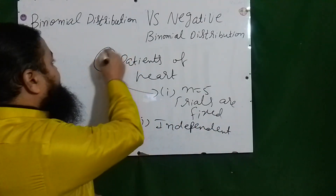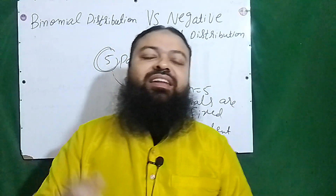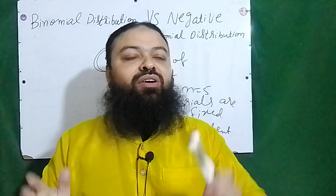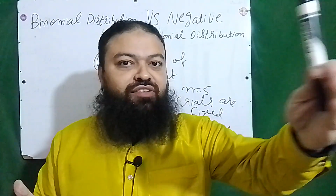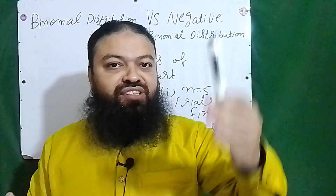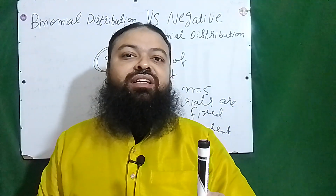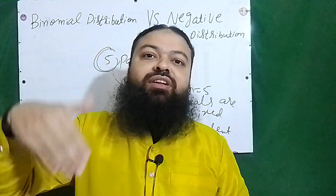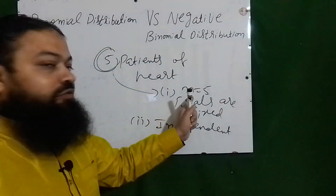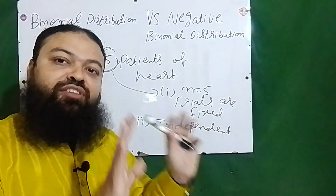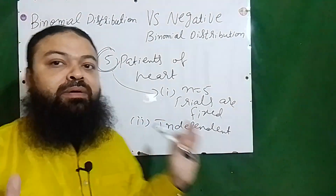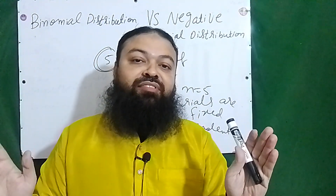These patients are independent. Their names are A, B, C, D, and E — all are independent. A has no connection with B, B has no connection with C, D has no connection with E. The probability will not be affected. So the trials are fixed at five, and all patients are independent with no connection between themselves.